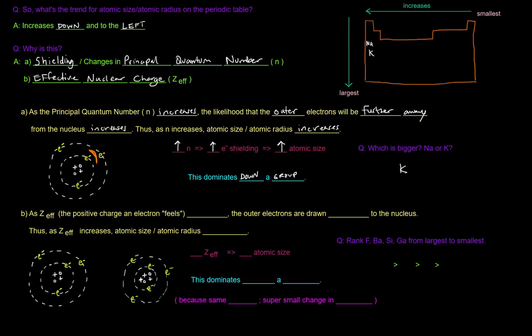Now what about across the periodic table? Well, as the effective nuclear charge, right, the positive charge an electron feels, as that increases, the outer electrons are drawn closer to the nucleus. They're pulled in closer. So as the effective nuclear charge increases, atomic size or atomic radius decreases.